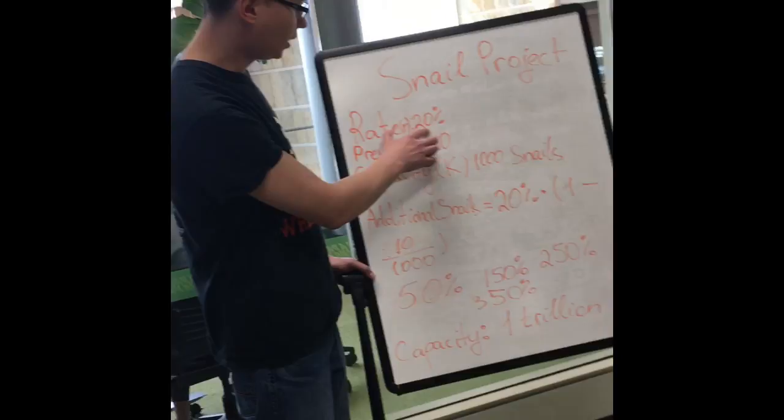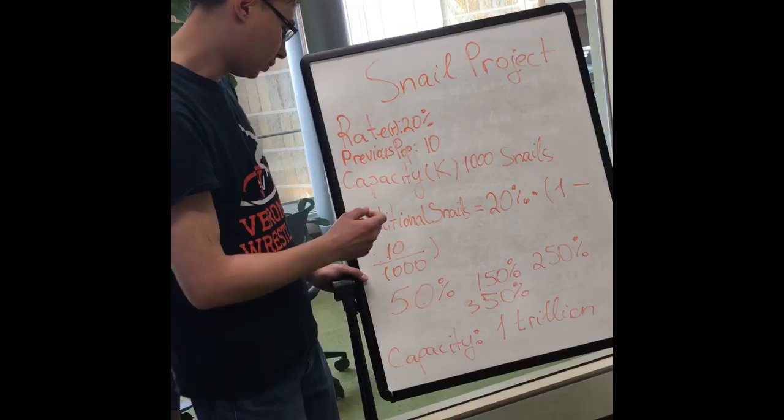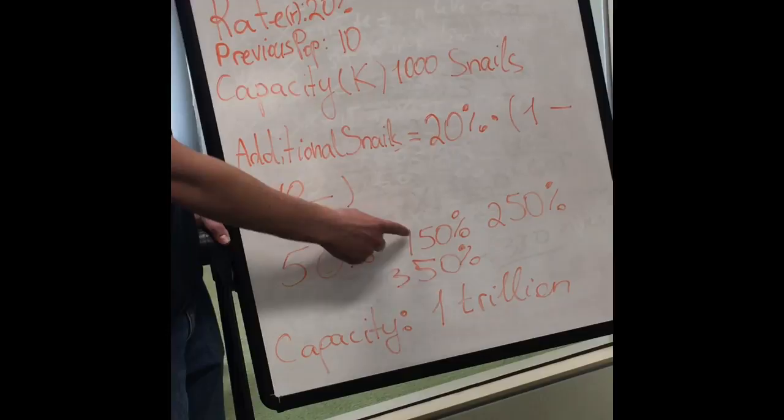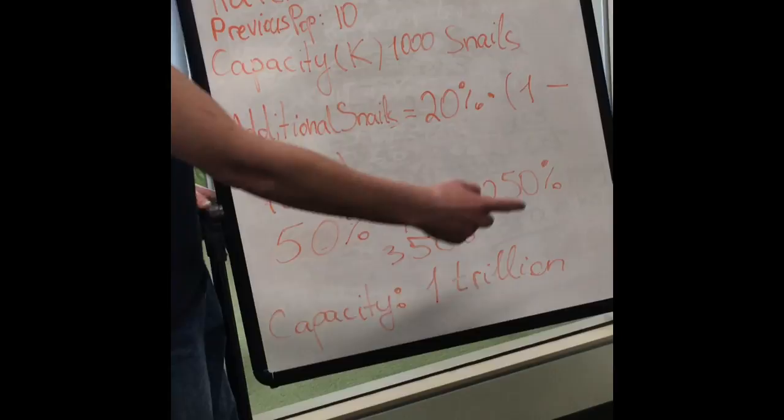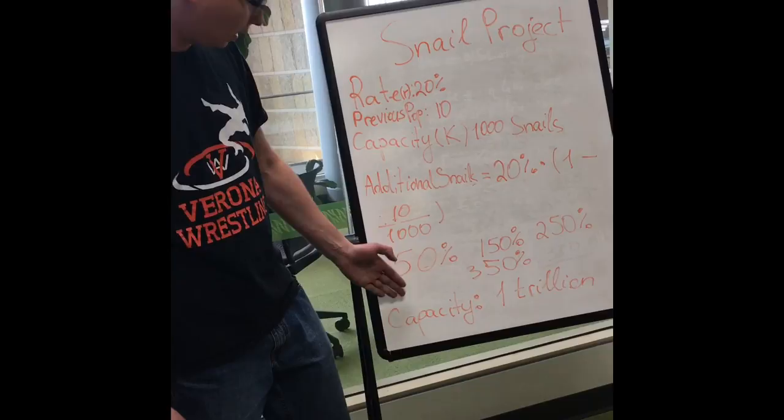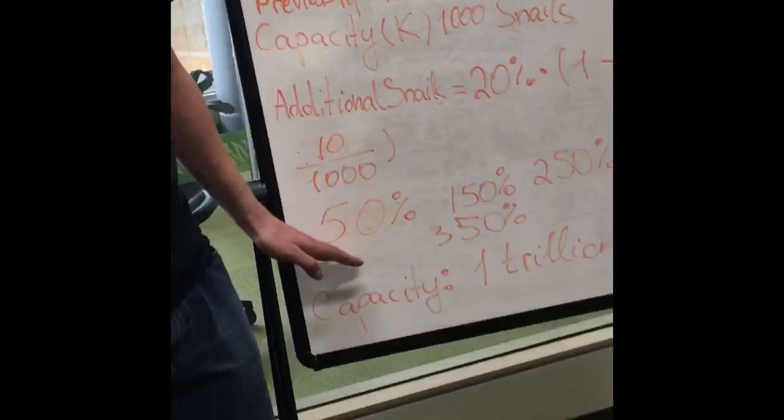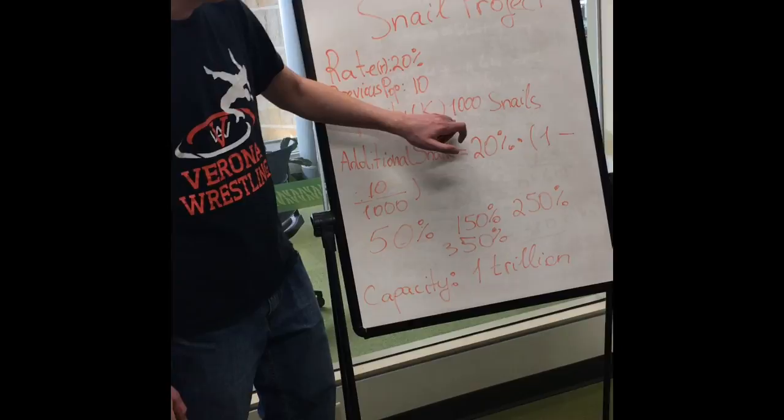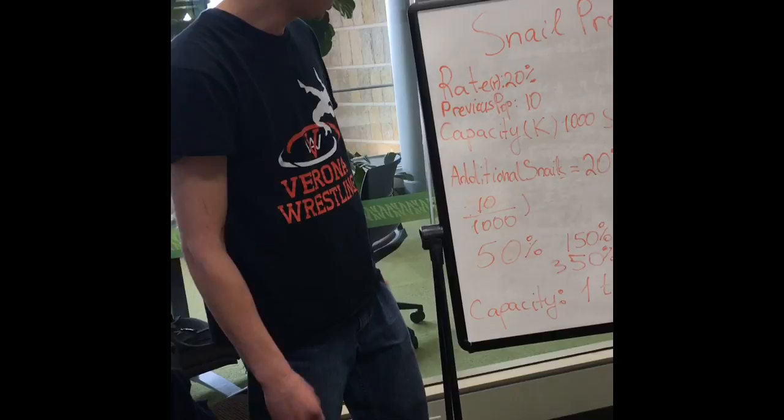So the 20% rate is one of the scatter plots that we've created for 52 weeks. Then we also have another scatter plot where we change the 20% to 50%. And after that we keep going, we create another scatter plot at a rate of 150%. Then we change our rate to 250%, create our 4th scatter plot, and our 5th scatter plot is at 350%. And for our final 6th scatter plot, we change the capacity, the carrying K, and still keep the 20% rate, 10 starting. But we change our 1,000 capacity to a trillion.